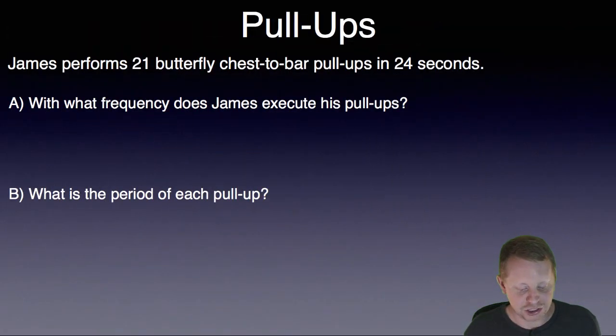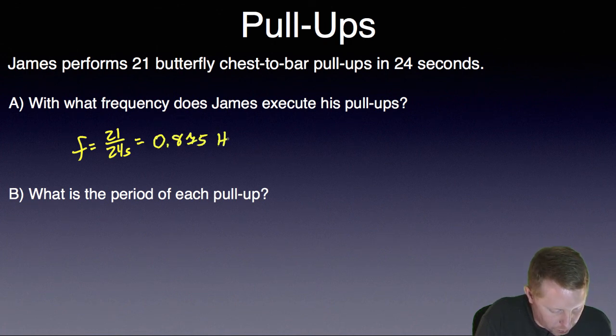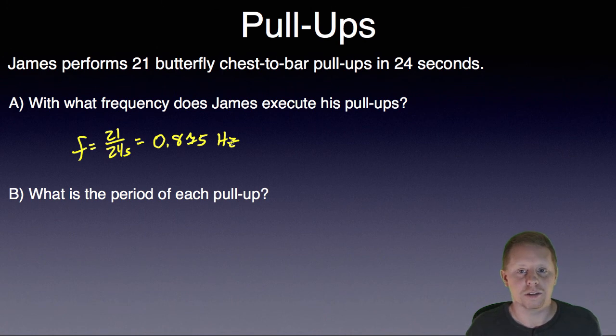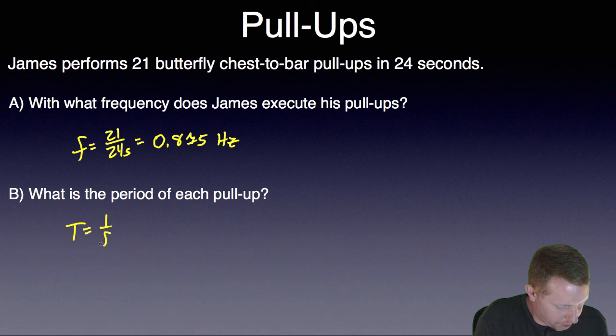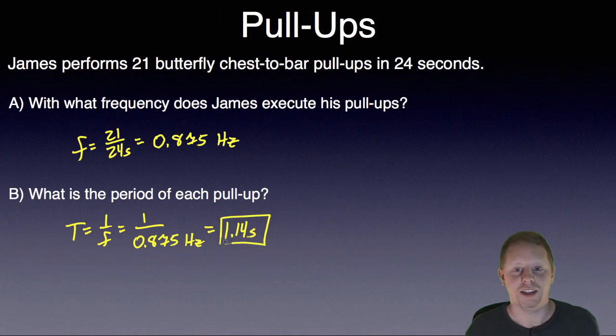With what frequency does James execute his pull-ups? Well, frequency is the number he can do in 1 second. He did 21 repetitions in 24 seconds, so 21 over 24 seconds is going to be 0.875 1 over seconds or hertz. In the period, how long it takes to do each pull-up is going to be 1 over the frequency or 1 over 0.875 hertz, which is 1.14 seconds for each pull-up.